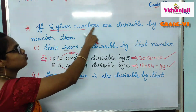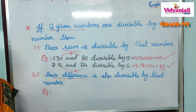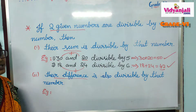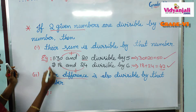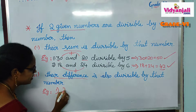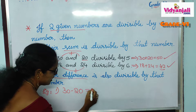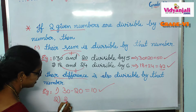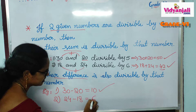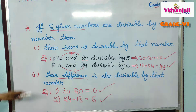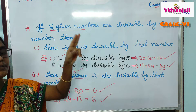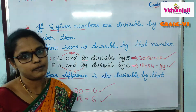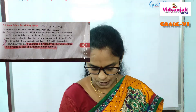Next point: if two numbers are divisible by any number, their difference is also divisible by that number. Let us use the same examples. 30 and 20 are divisible by 5. What is 30 minus 20? It is 10. Is 10 divisible by 5? Yes. And for 24 and 18: their difference is 6. Is 6 divisible by 6? Yes.